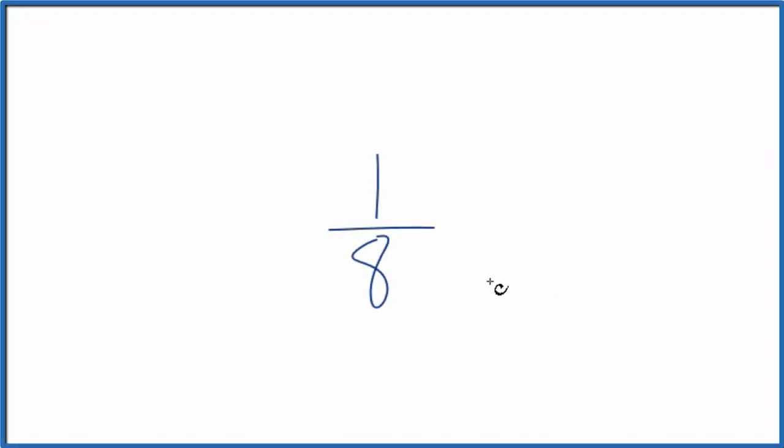If you need to write equivalent fractions for one-eighth, that's one over eight, here's how you do it. If we multiply this by one, it would still be one-eighth. But what we can do is multiply by two over two. Two divided by two, that's still one.